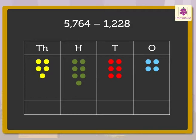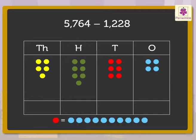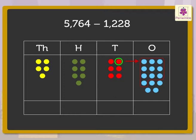Now, let us cancel the dots equal to the digits in the subtrahend in each column, starting with the ones column first, then the tens column, hundreds column and lastly the thousands column. But look, there are only four blue dots in the ones column and we need to cancel eight blue dots. We cannot subtract eight from four. So, we regroup one ten to ten ones. So, now we represent 5,764 with dots like this.